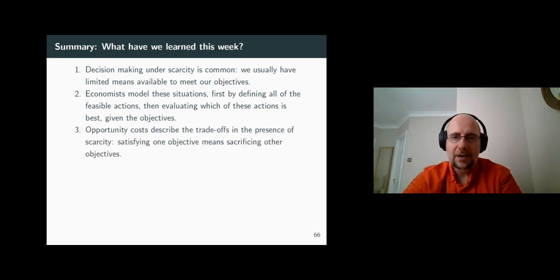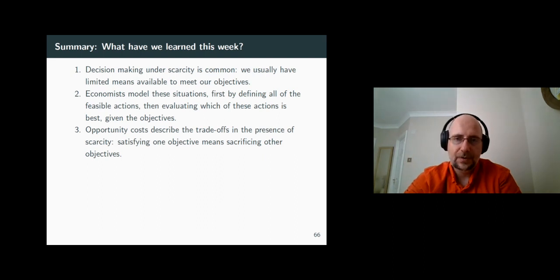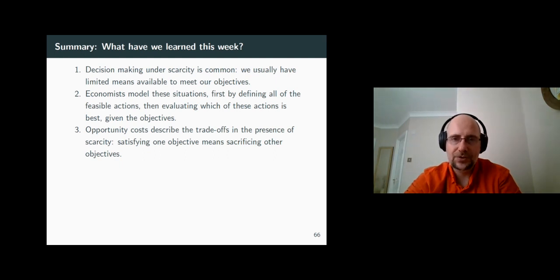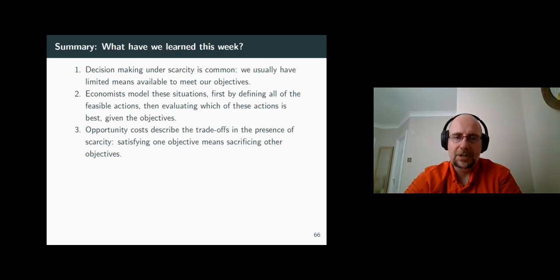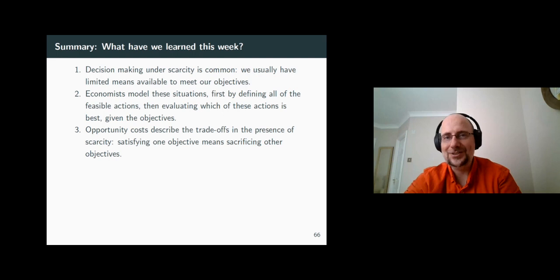At the same time, we saw that every choice involves opportunity costs — that is, the foregone benefits of making a certain choice. Incurring those opportunity costs meant that sacrificing one of our goals necessarily means achieving another, and vice versa. Achieving a goal necessarily means sacrificing another goal.